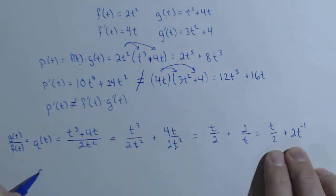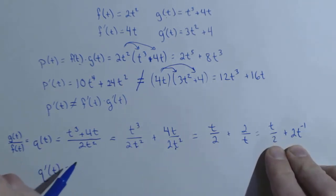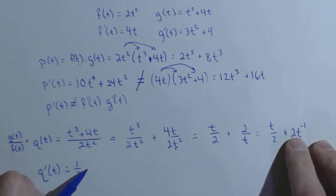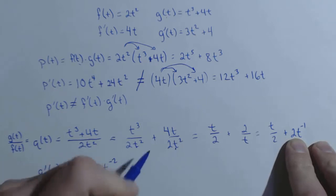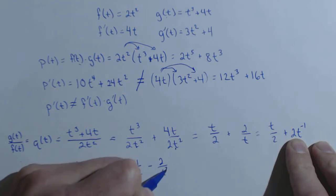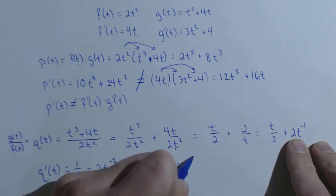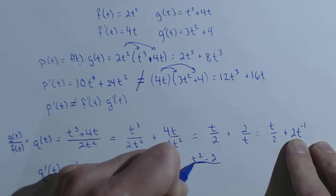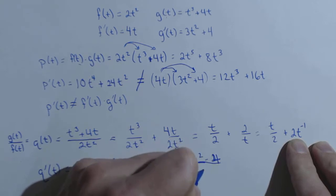So I'm going to calculate q prime of t directly from here. Derivative of t over 2, well, that's the same thing as 1 half t. It's just 1 half because the derivative of t is 1. Derivative of this part, bring the negative down, so it's going to become a minus 2t to the negative 2. Or 1 half minus 2 over t squared. Or if we wanted to give them a common denominator, it would be t squared minus 4 over 2t squared.